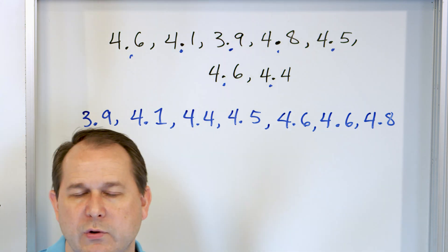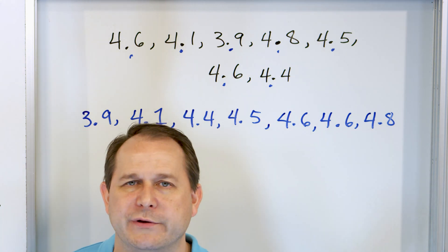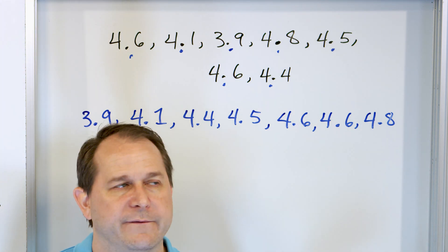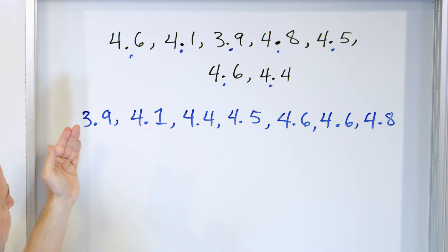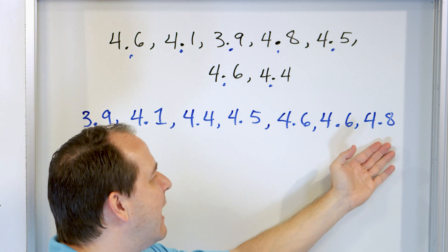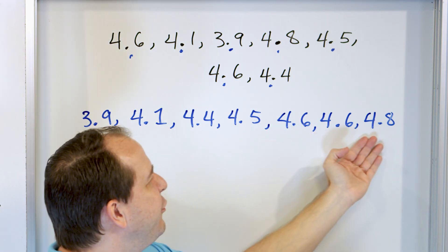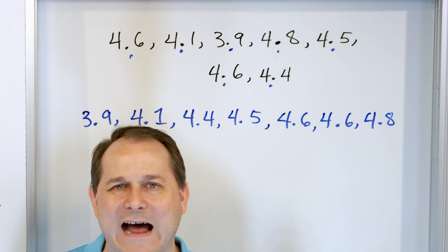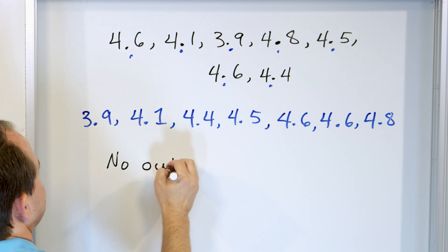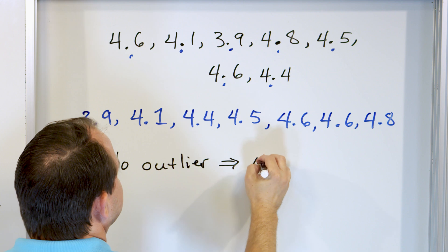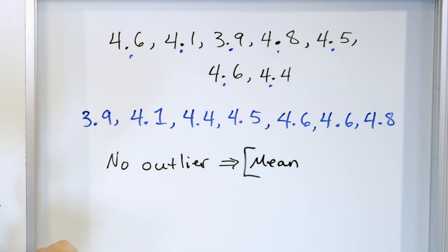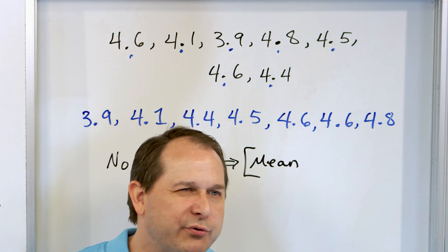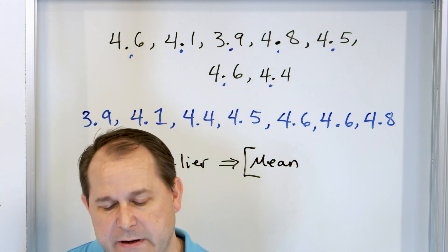Are we going to use the mode? No — we use the mode when we have non-numerical data like boys, girls, trucks, cars, favorite colors. So to figure out mean or median, we just ask: do we have any outliers? Well, the range goes from 3.9 up to 4.8. It's a pretty tight set of data and I don't see a data point that jumps way off the chart. So because we don't have any outliers, we use the mean. This could be the number of inches of rain in a city — no crazy outliers, so we use the mean.